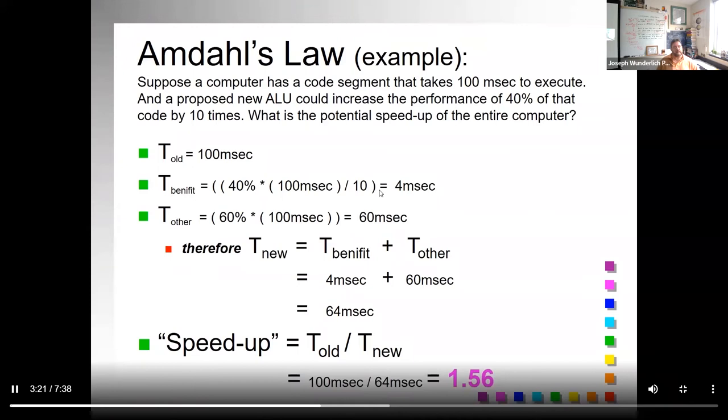You get four milliseconds for the part that's benefiting, it's faster, it's reduced that time. And then 60% of the code is still going at the 100 millisecond benchmark we had before we did anything. So we have 60 milliseconds contributing to the other. You add them together, and T_new is the benefit plus the other. You get four plus 60, which is 64.